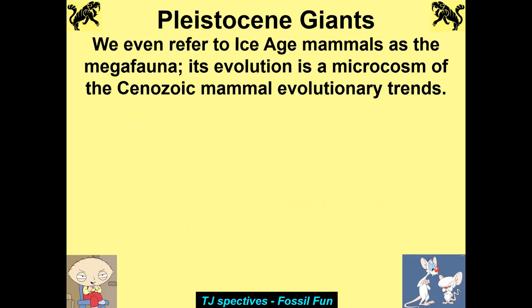Pleistocene giants: everyone thinks the Pleistocene is something special, but if you go back seven million years, you see the same type of echomorphs — just a little bit smaller, but there are still some big ones. The Pleistocene is the time of giants, but it's not unexpected. The Ice Age mammals are often called the megafauna, and their evolution is a microcosm of Cenozoic mammal evolutionary trends. From the early Pleistocene to late Pleistocene there was great cooling — the last third of the Ice Age was severe cooling — and you see bigger and bigger mammals, just like you see across the Cenozoic from about 50 million years ago to the end of the Ice Age.